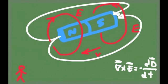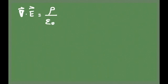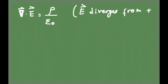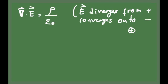Now, at the time of Maxwell, before Maxwell made his contribution, the equations that were known could be written using Maxwell's notation in terms of the divergence of E being equal to the charge density at some place in space. This equation basically means that the electric field diverges or originates from positive charges, and it converges onto negative charges.